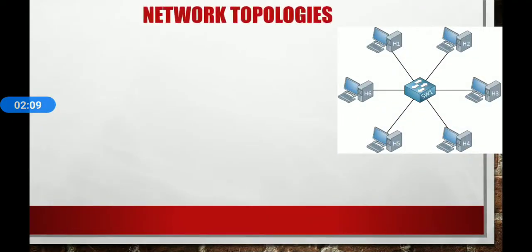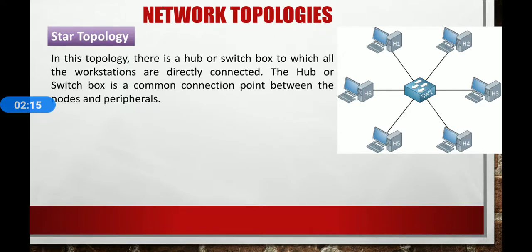Next is star topology. In star topology there is a hub or switch box to which all workstations are directly connected. Every workstation is indirectly connected to others throughout the hub. The hub or switch box is a common connection point between the nodes and peripherals — nodes meaning computers.